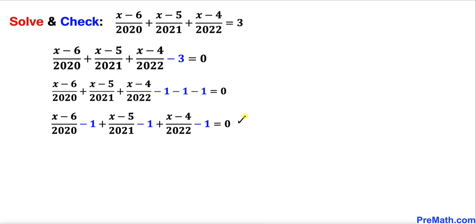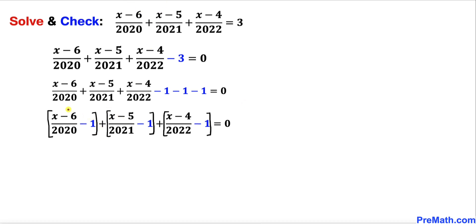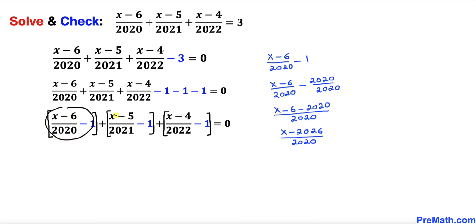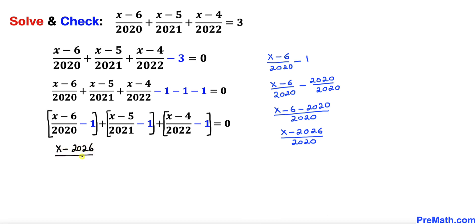As you can see in the next step, let me put brackets around these terms. Now let's focus on this very first bracket. Here 1 can be written as 2020 divided by 2020 — it doesn't make any difference. Since we now have the same common denominator, we can combine, and this whole thing simplifies to (x minus 2026) divided by 2020.